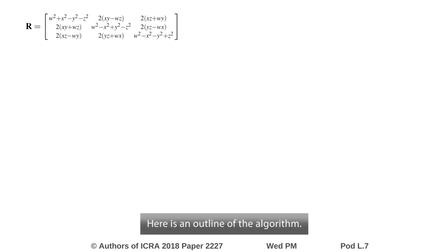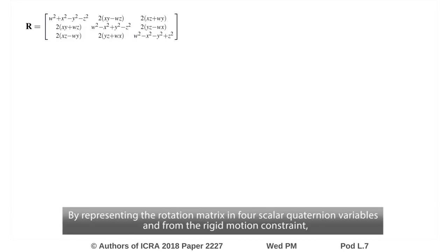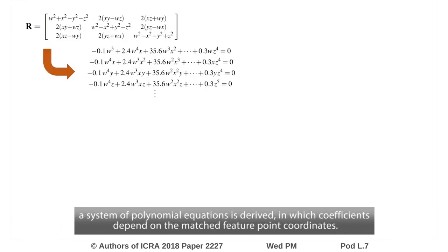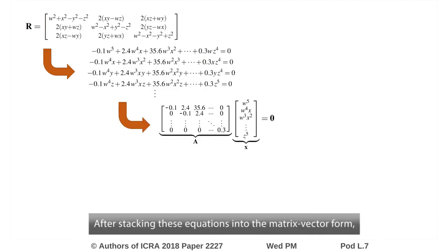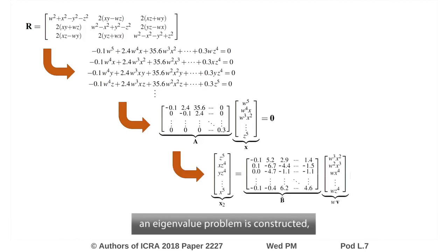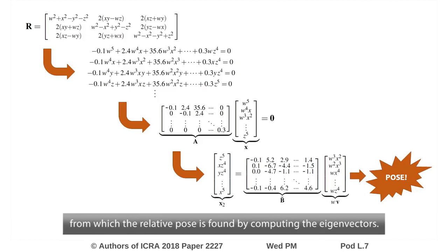Here is an outline of the algorithm. By representing the rotation matrix in four scalar quaternion variables and from the rigid motion constraint, a system of polynomial equations is derived, in which coefficients depend on the matched feature point coordinates. After stacking these equations into the matrix vector form, an eigenvalue problem is constructed, from which the relative pose is found by computing the eigenvectors.